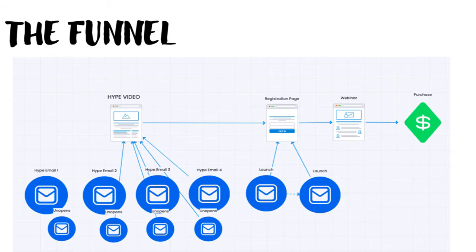This is a funnel I recently used for a webinar promotion. I have a series of folks already on my list and I start sending them emails five to seven days before the webinar. I set up an automation that sends certain emails at certain times before that webinar, and also sends more emails to anybody who hasn't opened the first email. The emails drive people towards a hype video with webinar details, then to a registration page, then to the webinar itself, where they can purchase an offer at the end.